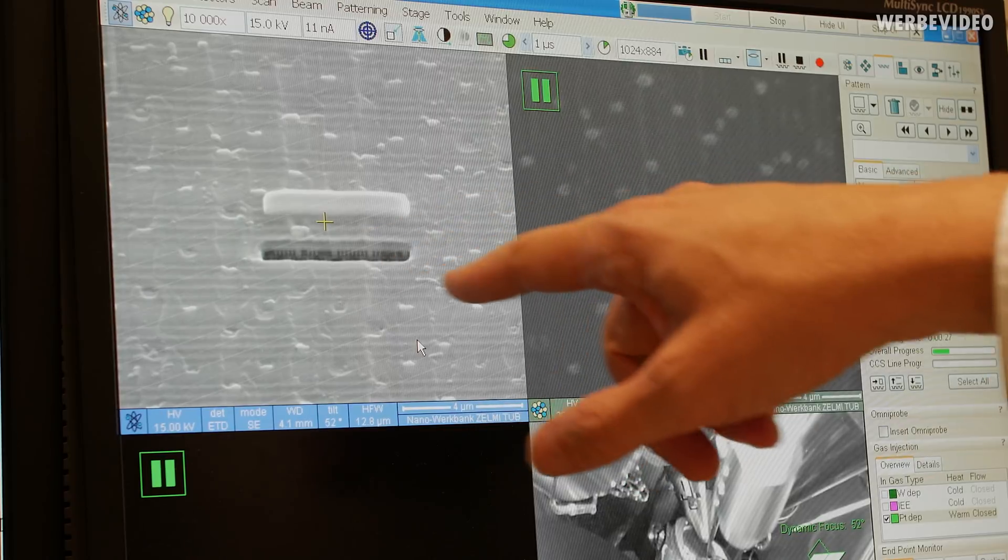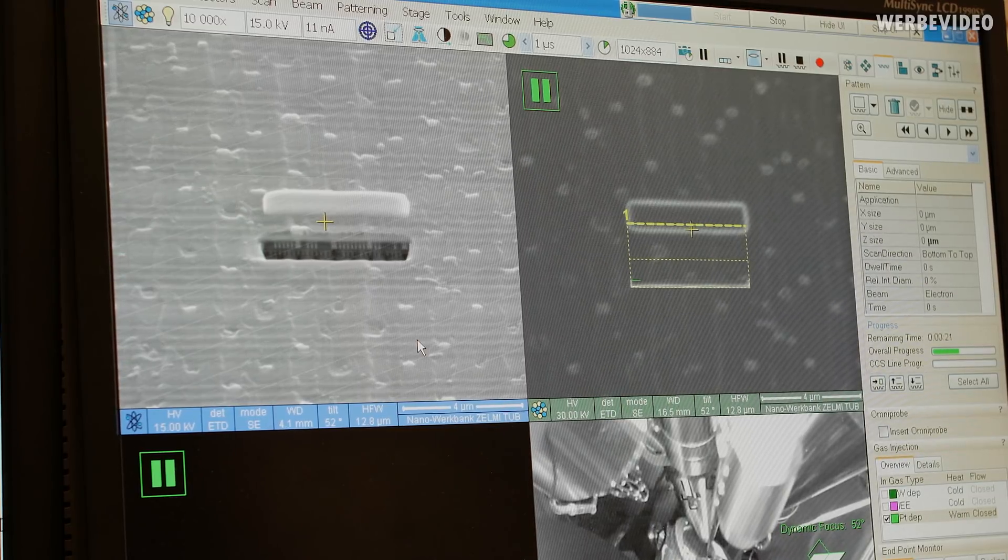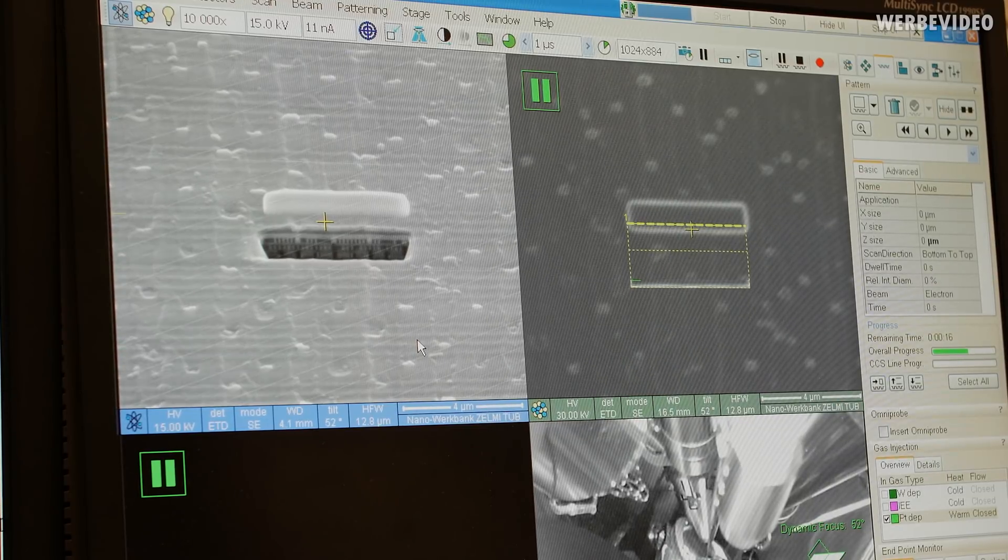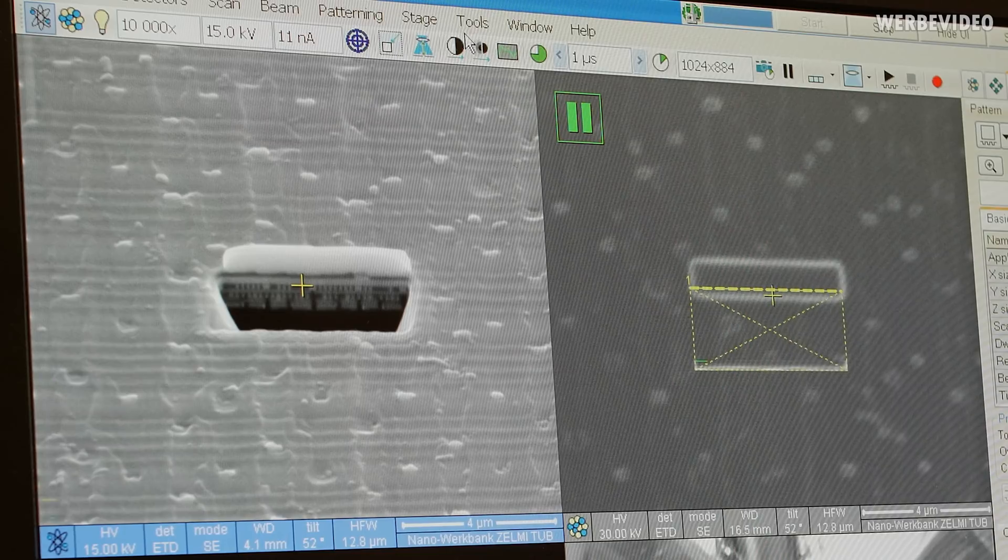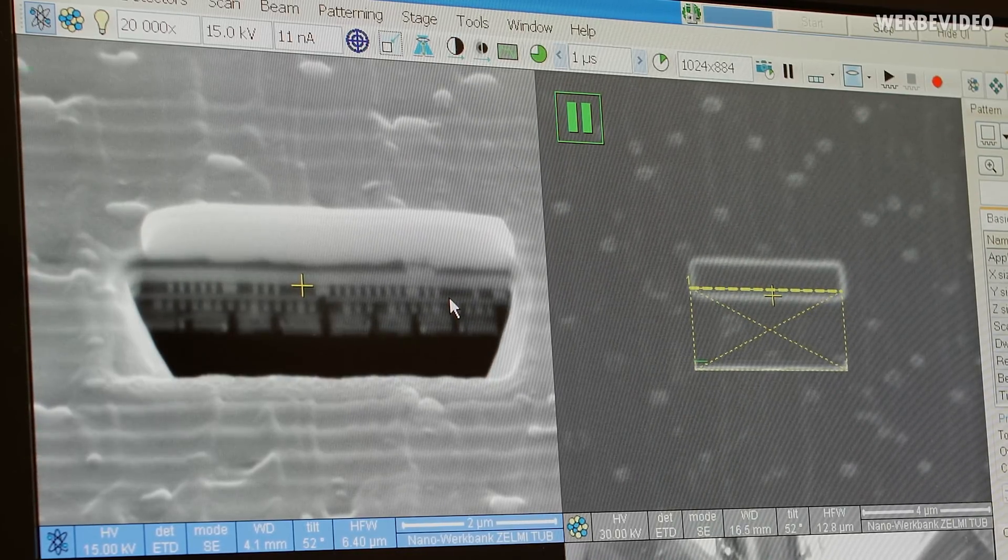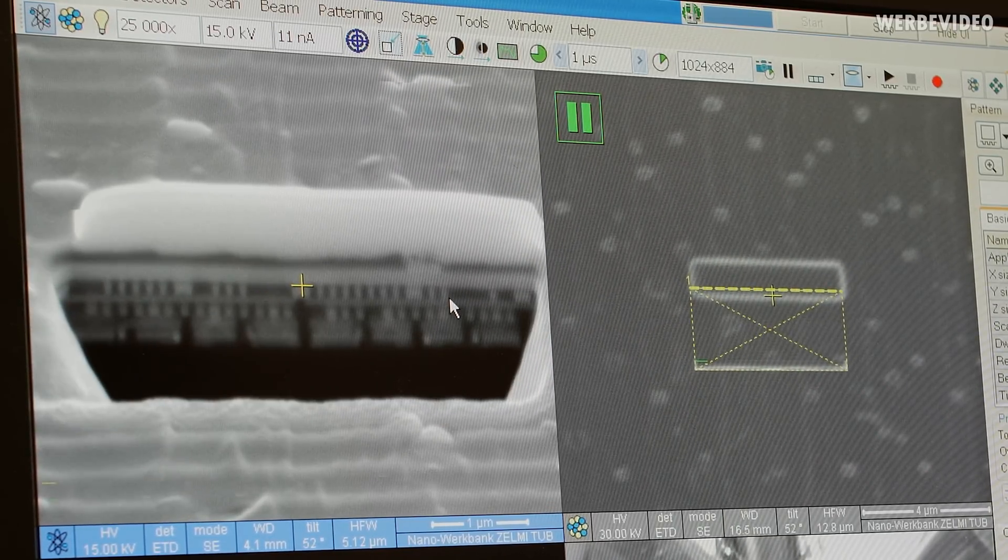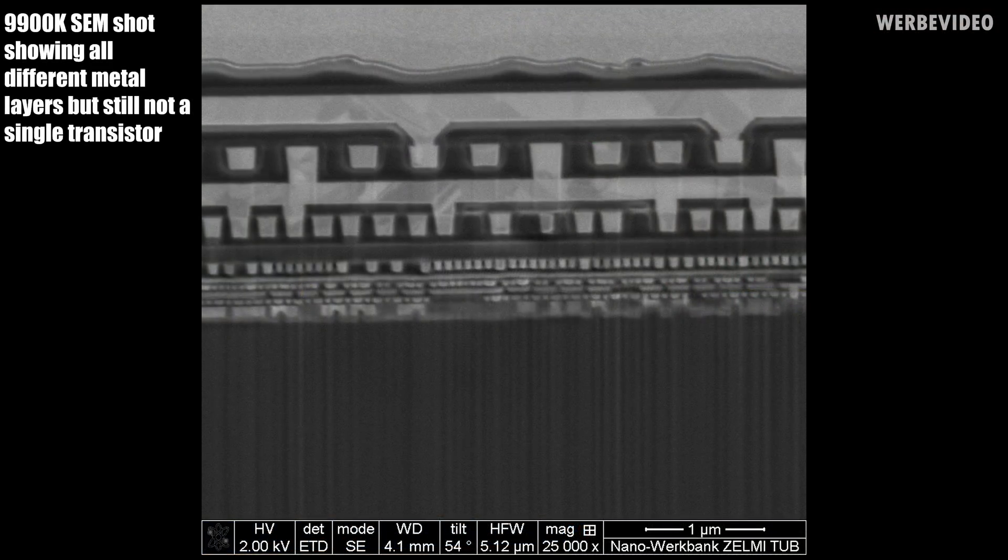And now we're ready to start this process. And what's happening now is that the ion beam is going along a line here and the line is slowly shifted forward. And by this, the material here is removed and all these semiconductor structures are released. And as you can see here, it's a very fast method to see these structures, the depth distribution of these structures. But unfortunately, the resolution is not high enough to resolve all these transistor structures inside of our specimen.